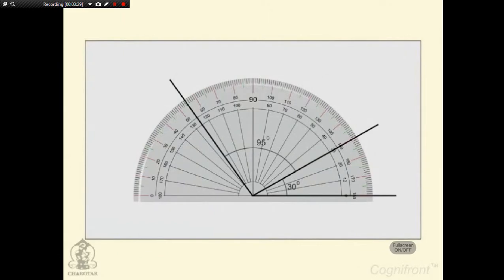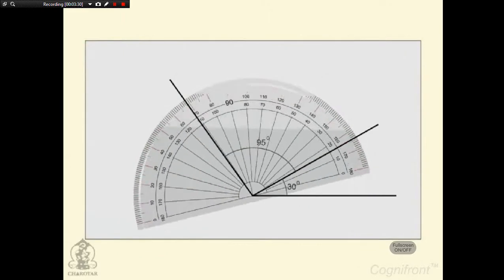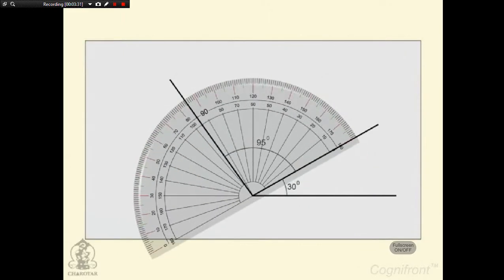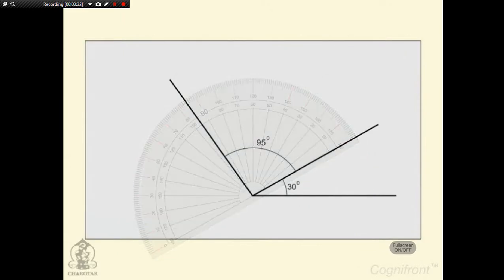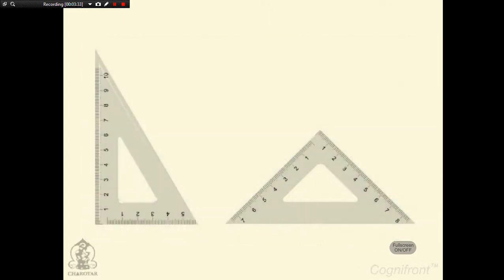Protractor is used to measure and layout angles. Another tool is set squares, also known as triangles. They come in two types: 30-60-90 degrees and 45-45-90 degrees.